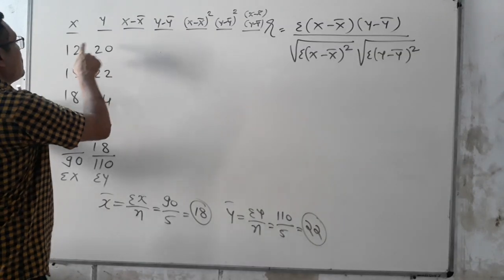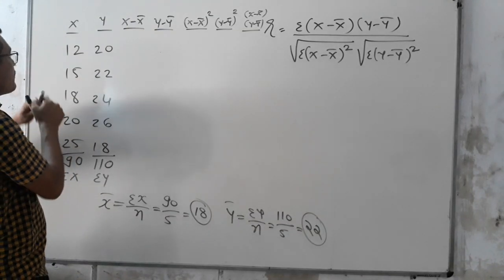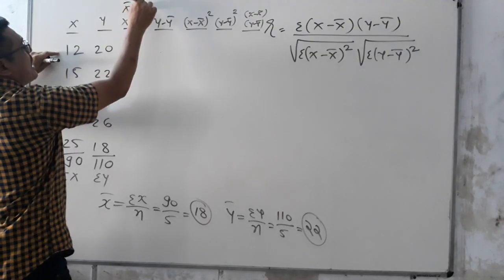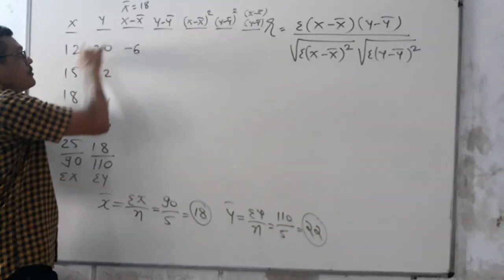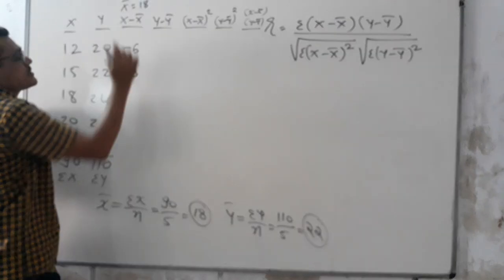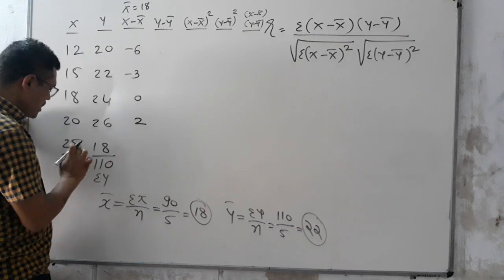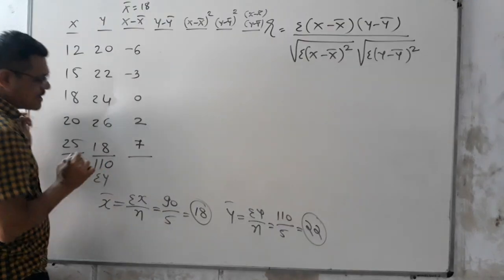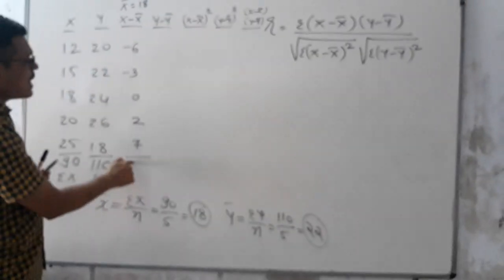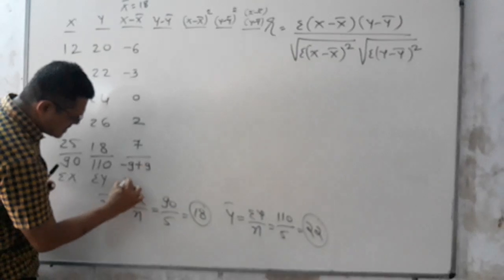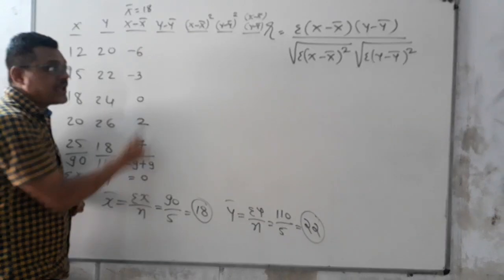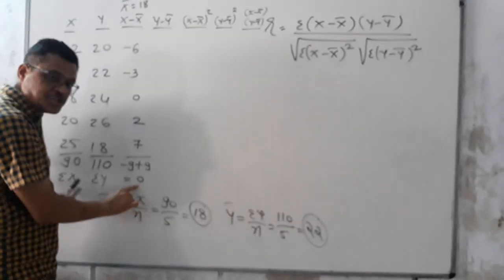For column 1, X − X̄ where X̄ = 18: 12 − 18 = −6; 15 − 18 = −3; 18 − 18 = 0; 20 − 18 = 2; 25 − 18 = 7. The total of (X − X̄): −6 − 3 + 0 + 2 + 7 = −9 + 9 = 0. One thing to remember, students: Σ(X − X̄) will always be 0.